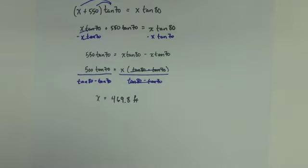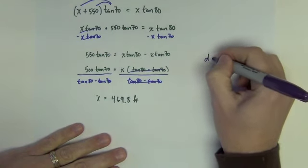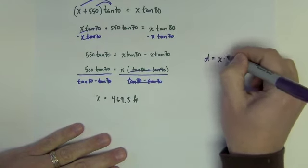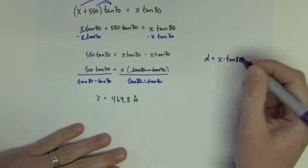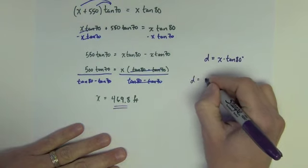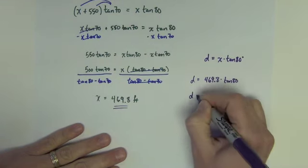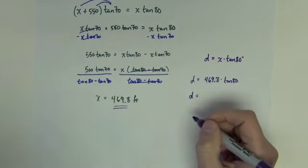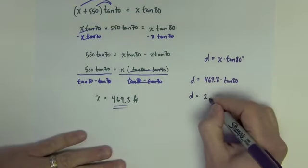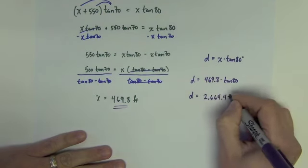Now I'm going to bring back from the other slide. You should probably still have it written down. We had an equation written down in purple that said d equals x times the tan of 80 degrees. We now know what x is. So therefore d is equal to that 469.8 times the tan of 80. And d, the value that I want, is equal to 2664.4 feet.